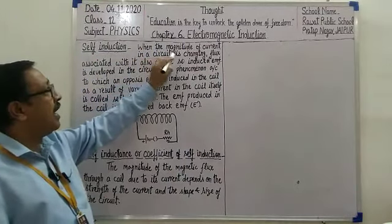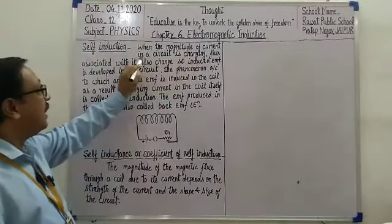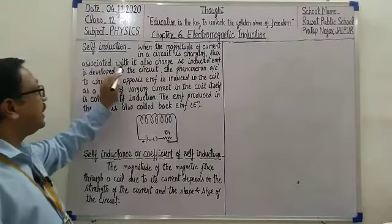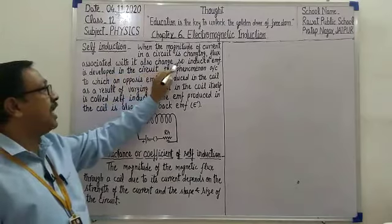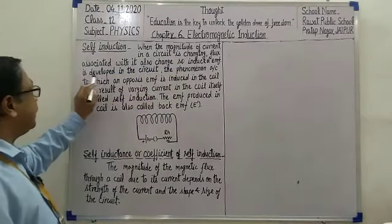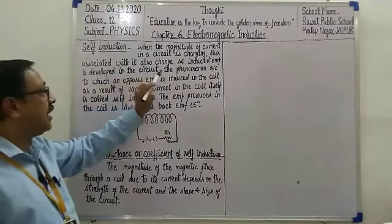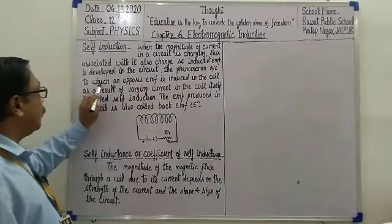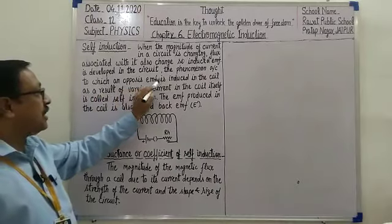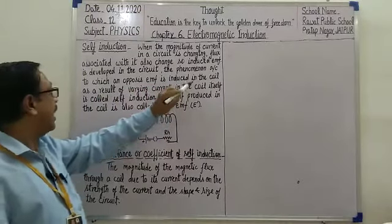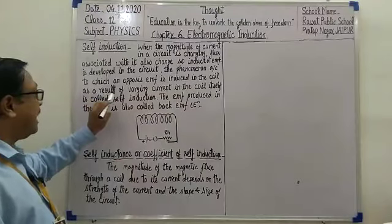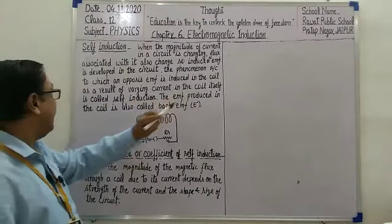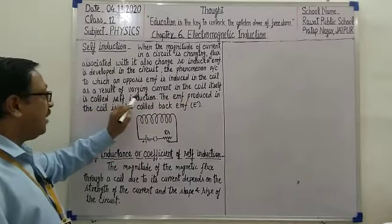When the magnitude of current in a circuit is changing, the flux associated with it also changes, so an induced EMF is developed in the circuit. The phenomenon according to which an opposing EMF is induced in the coil as a result of varying current in the coil itself is called Self-Induction.